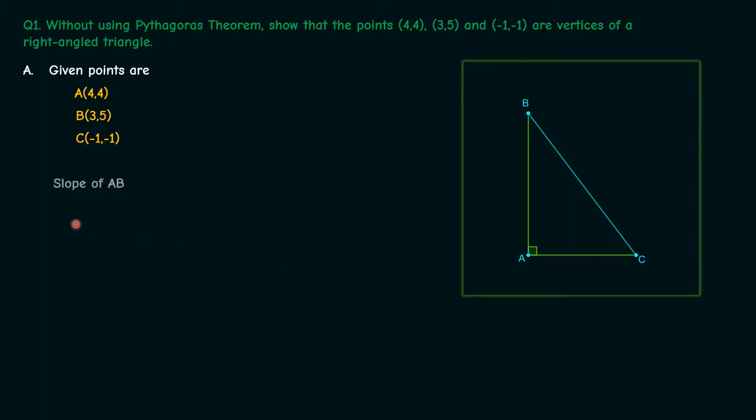So first we will find the slope of AB which is (5-4)/(3-4) which is minus 1. Similarly slope of BC is (–1–5)/(–1–3) which is 3/2.